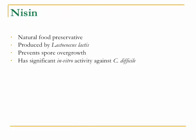Nisin is a natural food preservative found in some foods we eat today, produced by Lactococcus lactis. It works by preventing spore overgrowth and has significant in vitro activity against C. diff. It is being investigated as a preservative-derived agent to help treat C. diff infections.